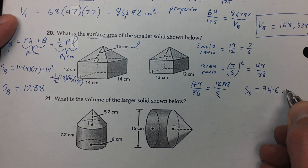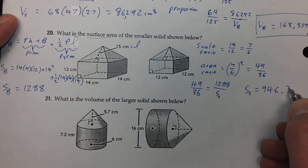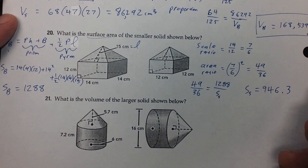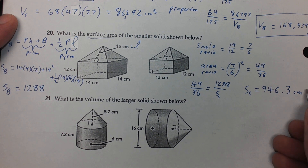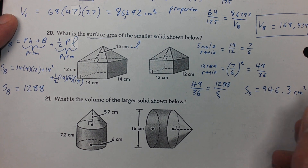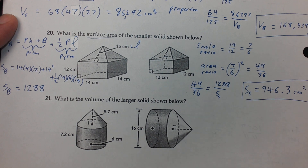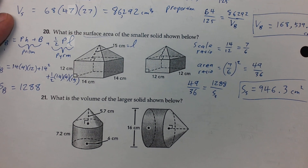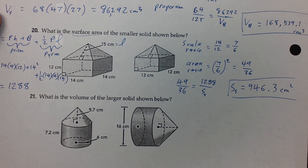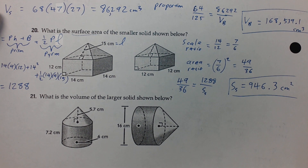You get the smaller surface area equal to 946.3 square centimeters, rounded to the nearest tenth. So that is how you do number 20, and that is the last problem I will go over. Hopefully that was helpful to everyone.